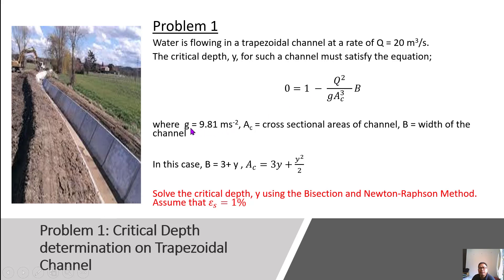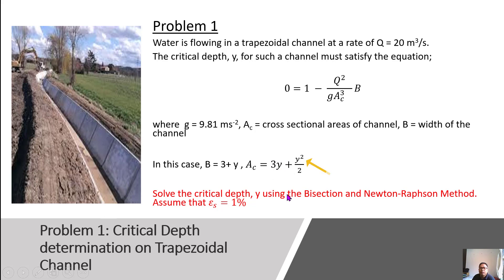The parameter g, which is gravity, is given as 9.81. The cross-sectional area of the channel is given by Ac equals 3y plus y-squared over 2, and the expression for the width B is equal to 3 plus y. In problem number one, you are required to solve the critical depth y using the bisection method and interpolation method.